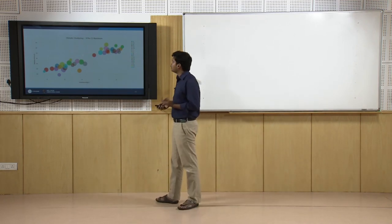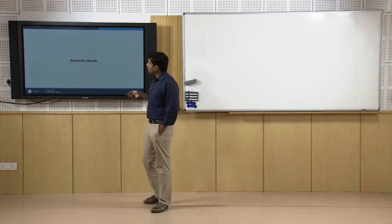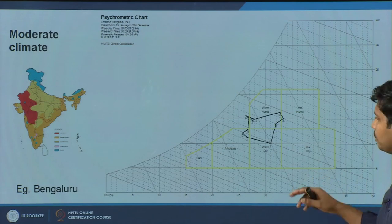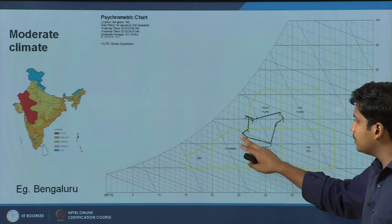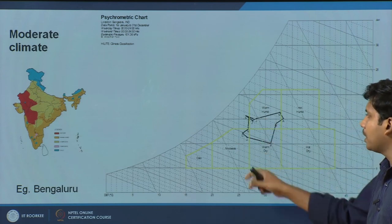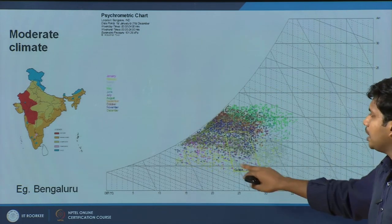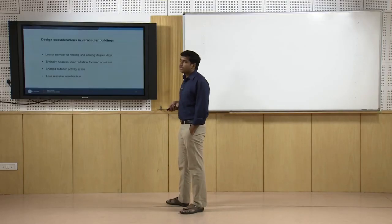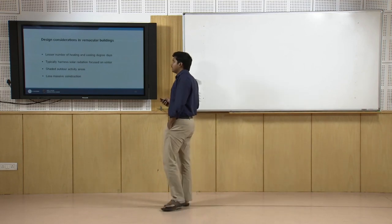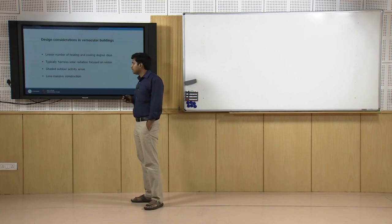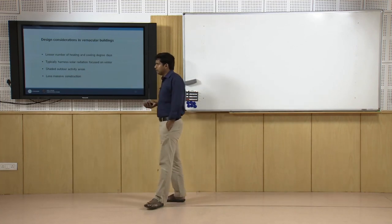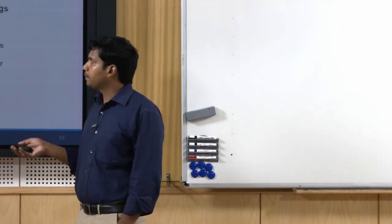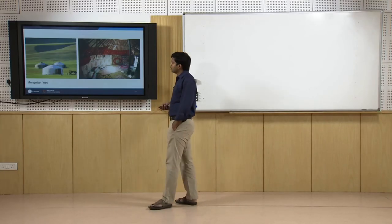Next is moderate climate — a pretty comfortable climate. Bangalore is the example considered here. The data spreads partly in warm and dry, warm humid, and moderate zones, with a lot of data points lying within the comfort zone and fewer heating and cooling degree days. Typically they harness solar radiation focusing on winter, can have lots of shaded outdoor activities, and construction can be less massive with lower thermal capacity requirements.